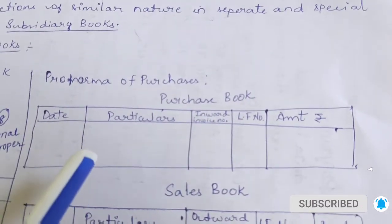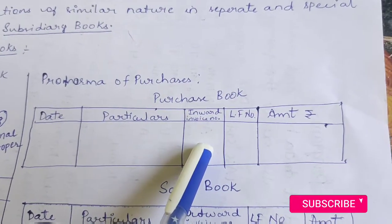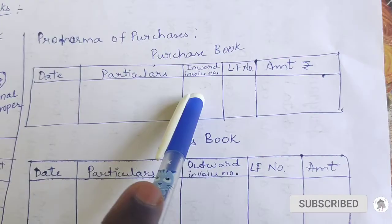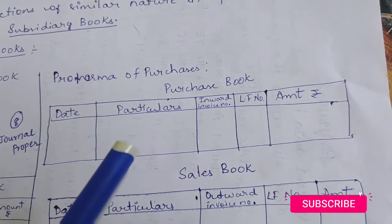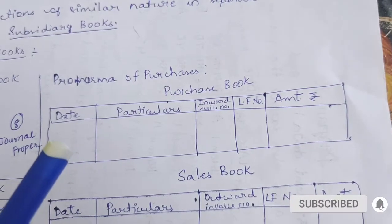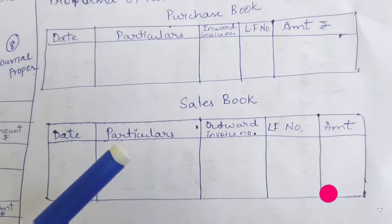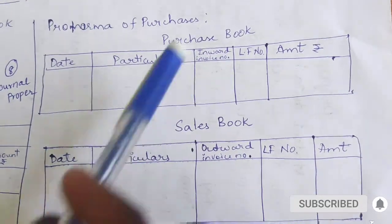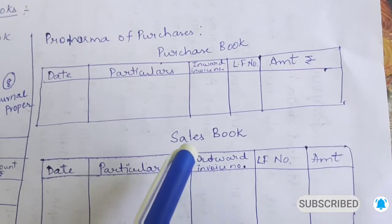The purchase book has 5 columns: Date, Particulars, Invoice Number (Inward Invoice Number), LF Number, and Amount. The only new column compared to a regular journal is the Inward Invoice Number — it is just a serial number given to each transaction in the question. Sales book has exactly the same columns, but the only difference is that instead of Inward Invoice Number, it has Outward Invoice Number. That is the only difference between the purchase book and the sales book.